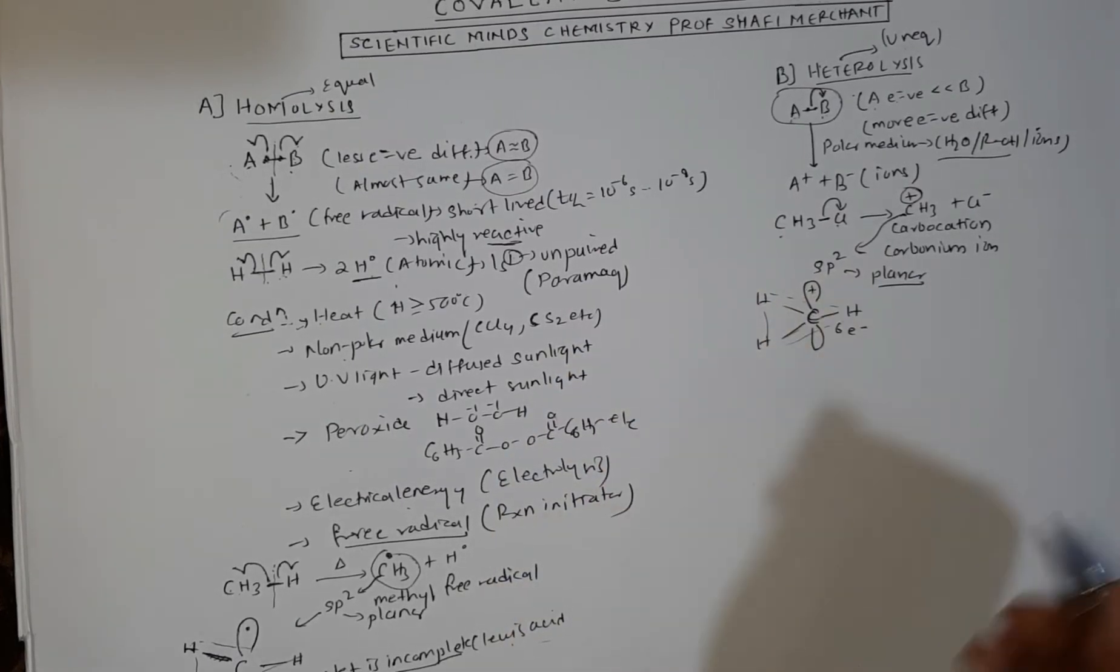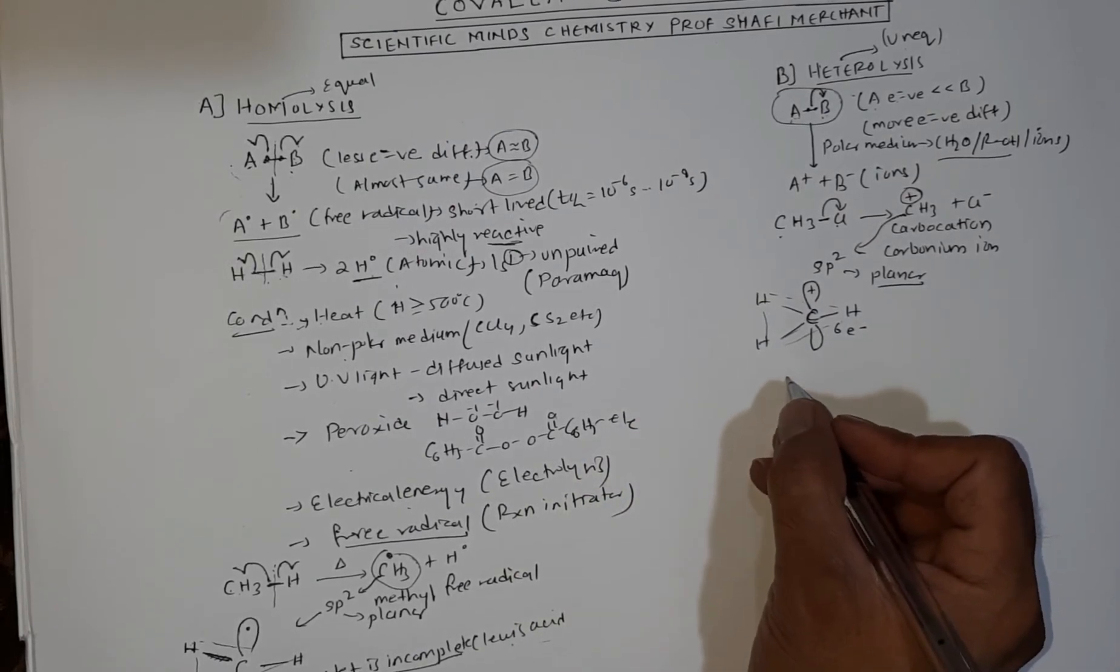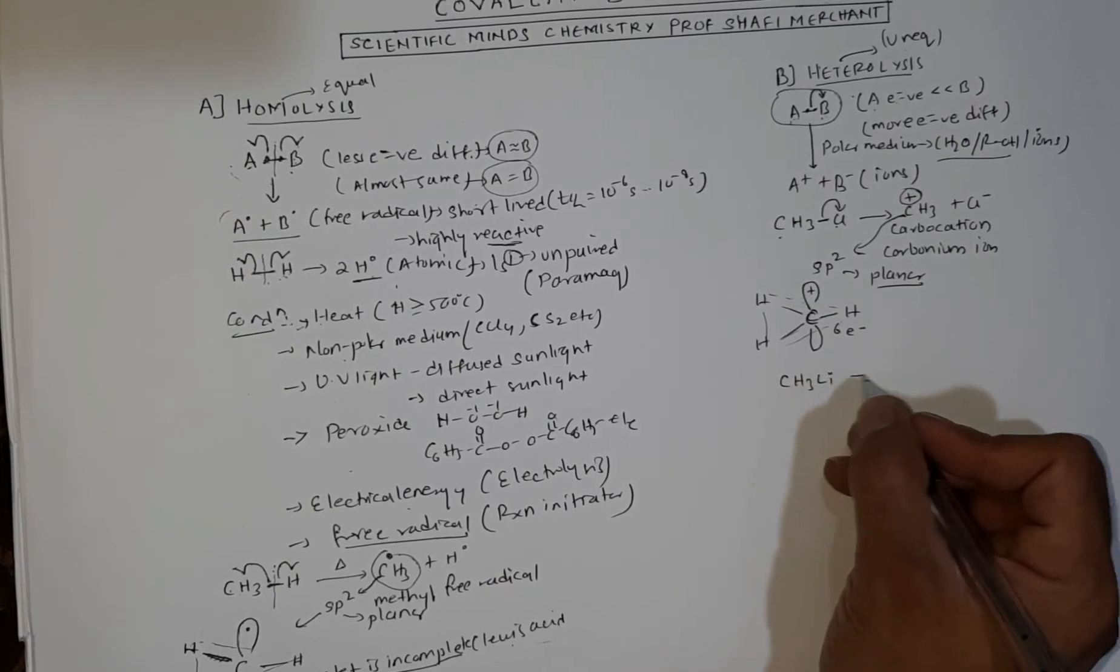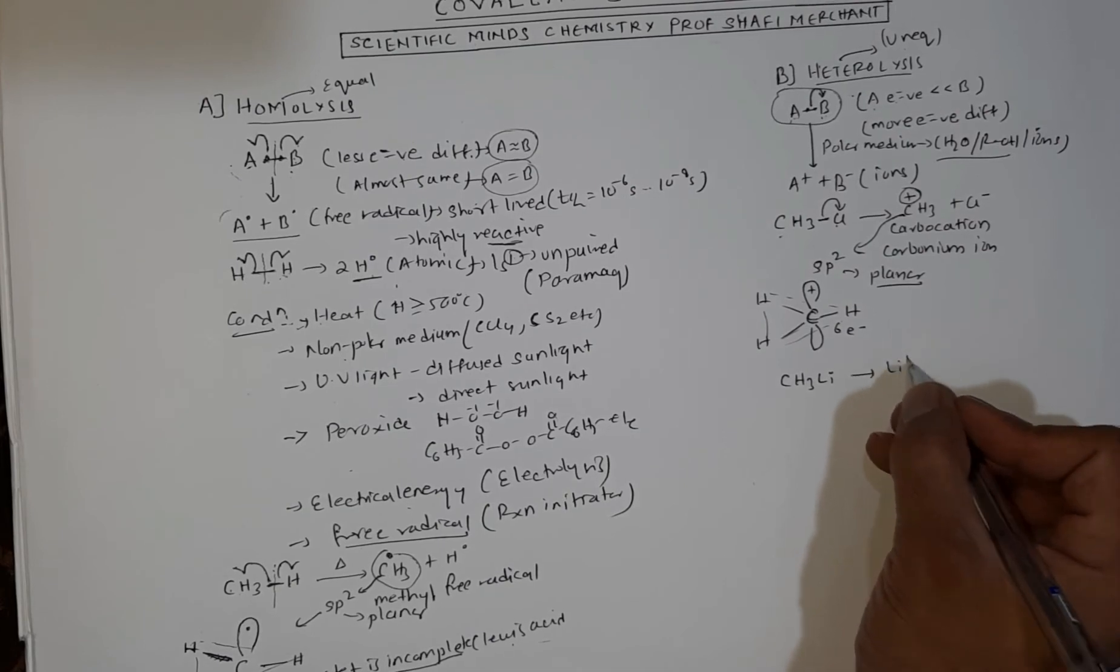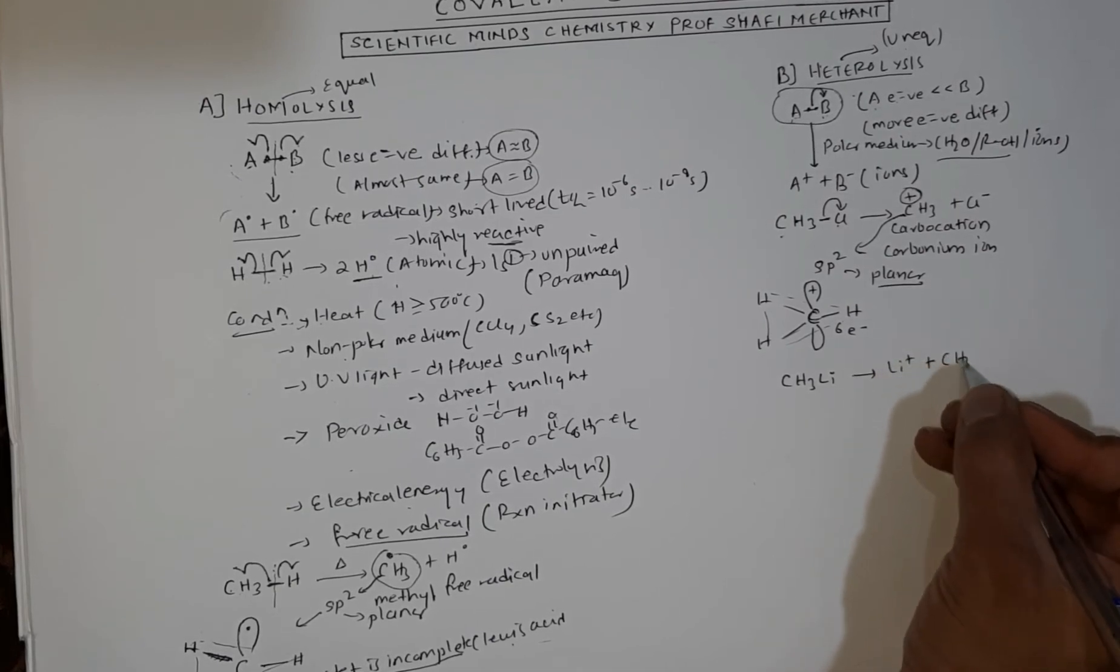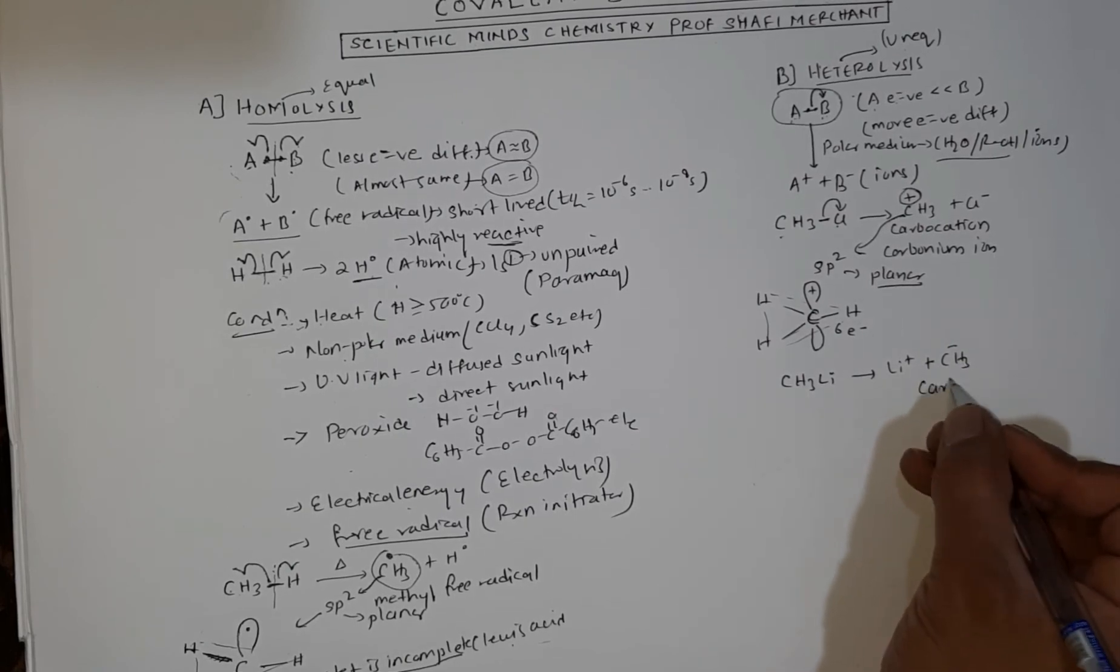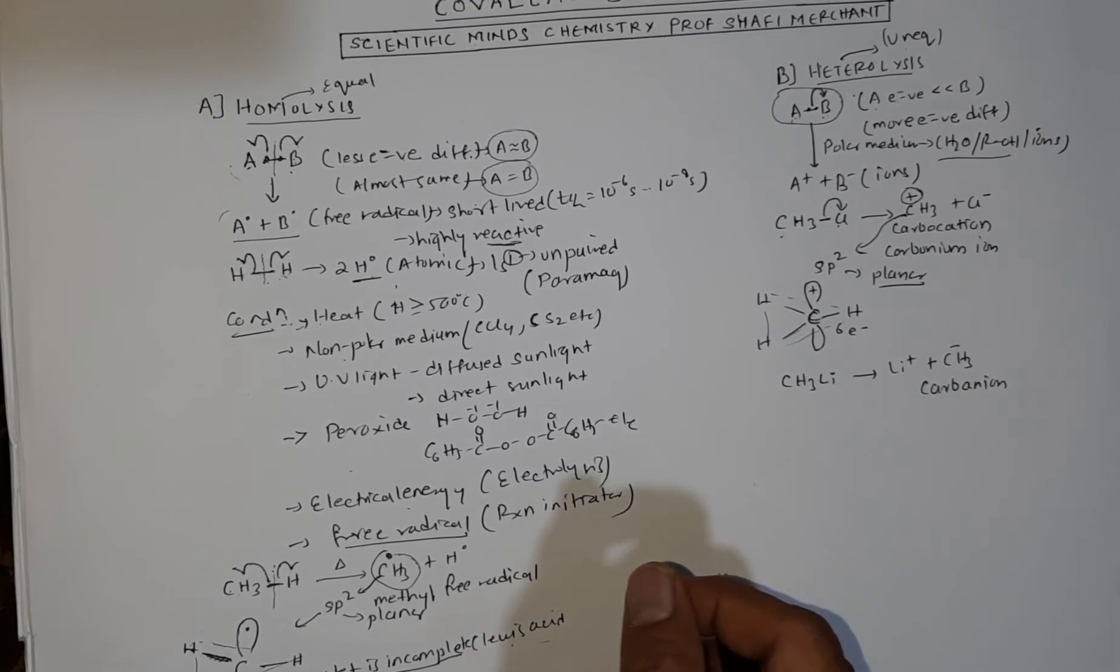In free radical it's a planar structure: C-H-H-H, but this p orbital will be empty. It has 6 electrons in outermost shell. This is also electron deficient. It can accept electron pairs and act as Lewis acid. It has planar structure, sp2 hybridized.